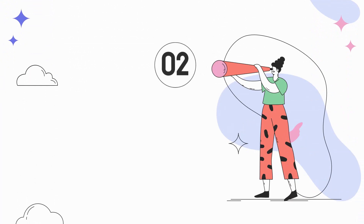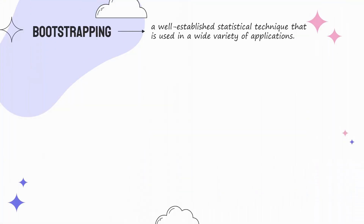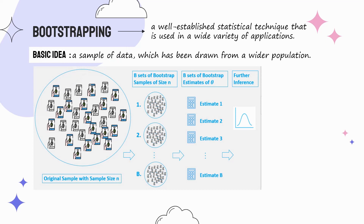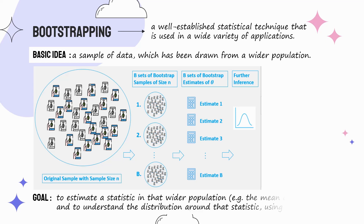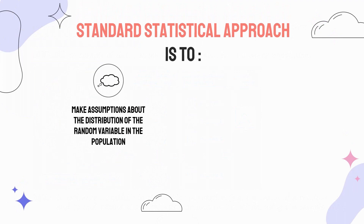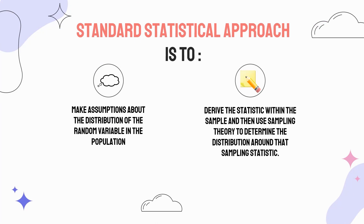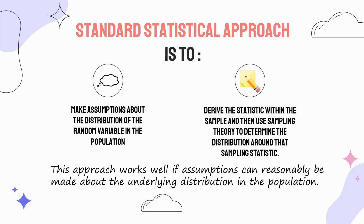The second method is bootstrapping. Bootstrapping is a well-established statistical technique used in a wide variety of applications. The basic idea begins with a sample of data drawn from a wider population. The goal is to estimate a statistic in that wider population — for example, the mean of a random variable — and to understand the distribution around that statistic. A standard statistical approach is to make assumptions about the distribution of the random variable, derive the statistic within the sample, and use sampling theory to determine the distribution around that sampling statistic. This works well if assumptions can reasonably be made about the underlying distribution in the population.